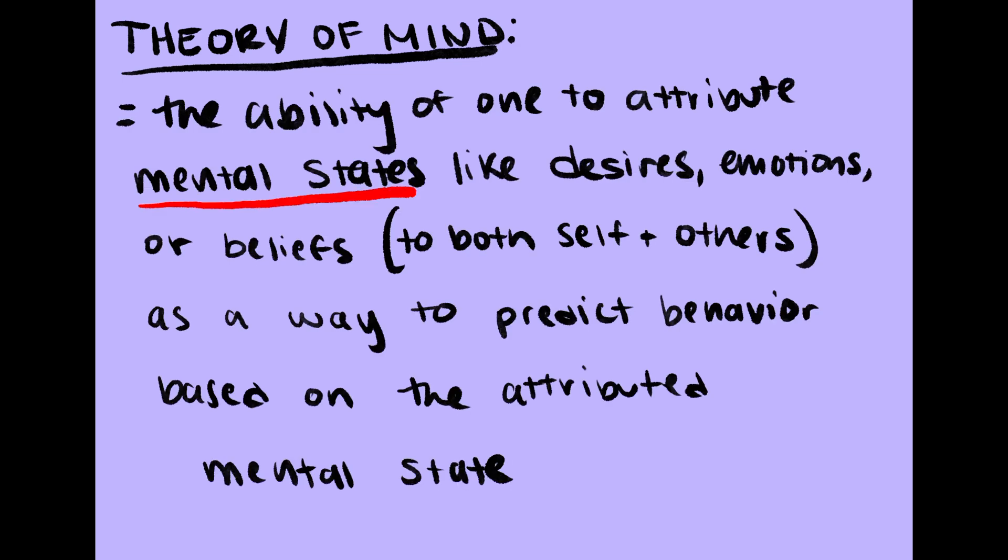Theory of mind is essentially the ability of one to attribute mental states like desires, emotions, or beliefs to both self and others as a way to predict behavior based on the attributed mental state.